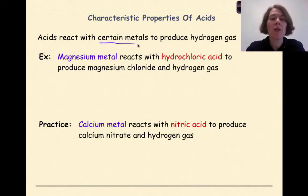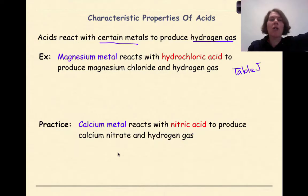Acids react with certain metals to produce hydrogen gas. Now this is totally based on table J of your reference table. So when we write out these examples right here, you're going to say, wow, that looks really familiar. And you're right, it's all about single replacement reactions, where when you look at table J, a metal that is high on table J can replace any metal below it.